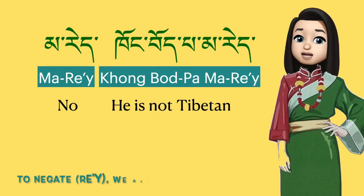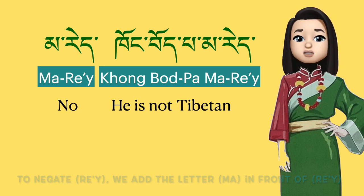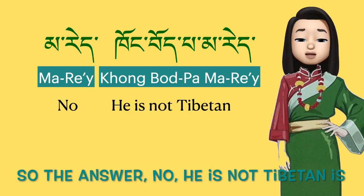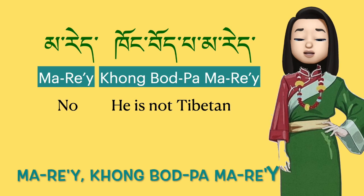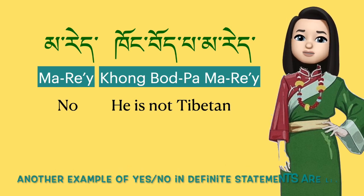To negate 're', we add the letter 'ma' in front of 're', so that is 'ma re'. So the answer 'No, he is not Tibetan' is 'ma re', 'khong purpa ma re'. Another example of yes and no in a statement.